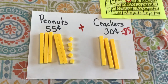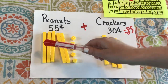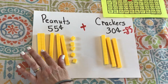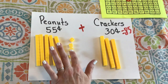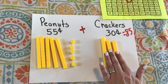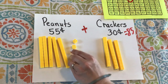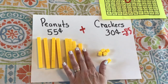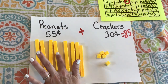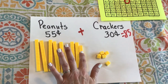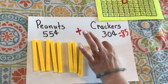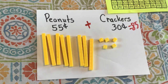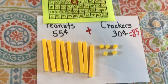I can double check that with my tens and ones cubes. Here's $55 — $10, $20, $30, $40, $50, $51, $52, $53, $54, $55. And here's $30 — $10, $20, $30. I'll combine them together: $10, $20, $30, $40, $50, $60, $70, $80, $81, $82, $83, $84, $85. I found the same answer with both strategies.